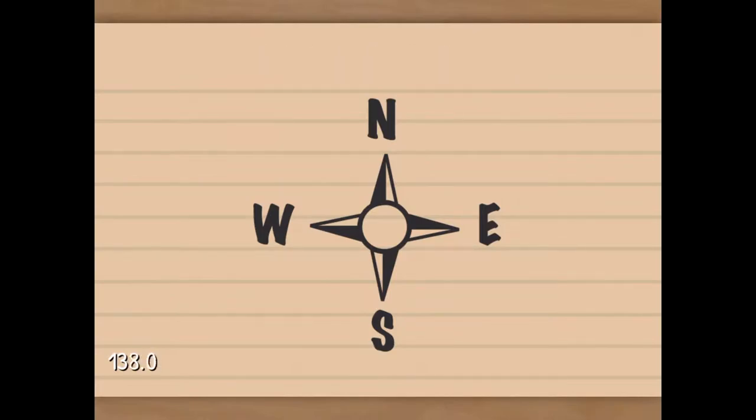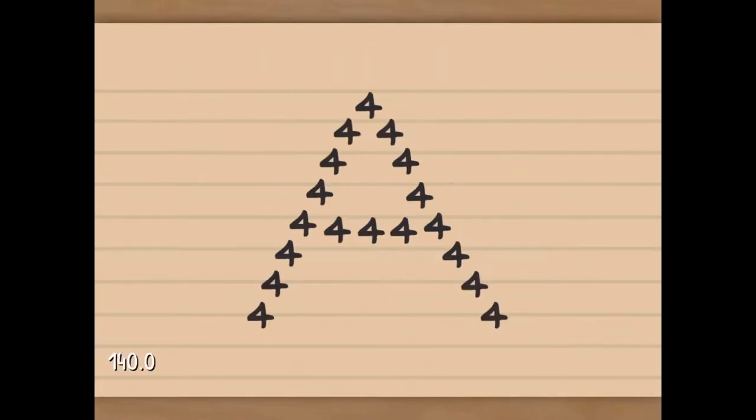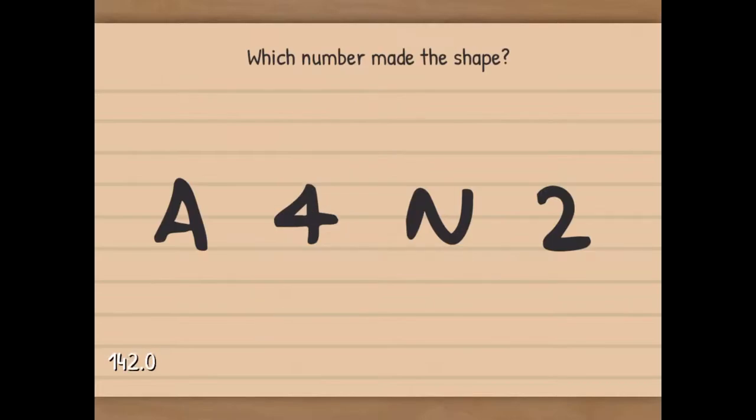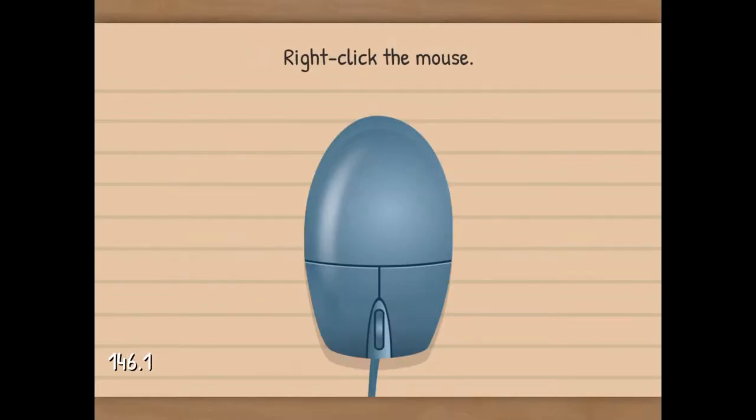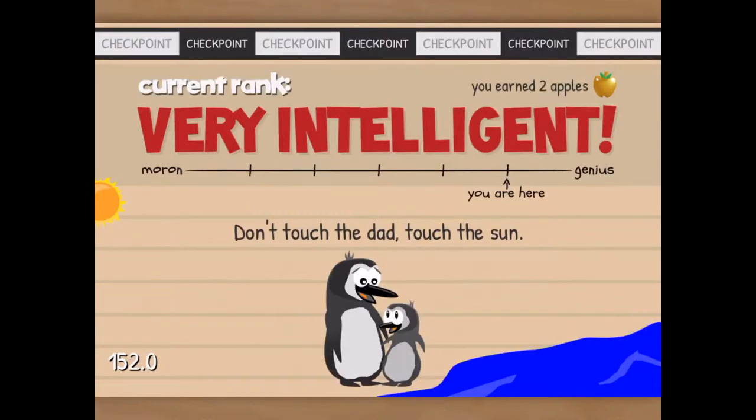Touch north and south twice. Okay, that's a bunch of fours. Right click the. Oh. Just like flip it over. There we go. Oh. Remember Hint. It's the green one. Don't touch the dad. Touch the son. Oh, it's a U, not an O.